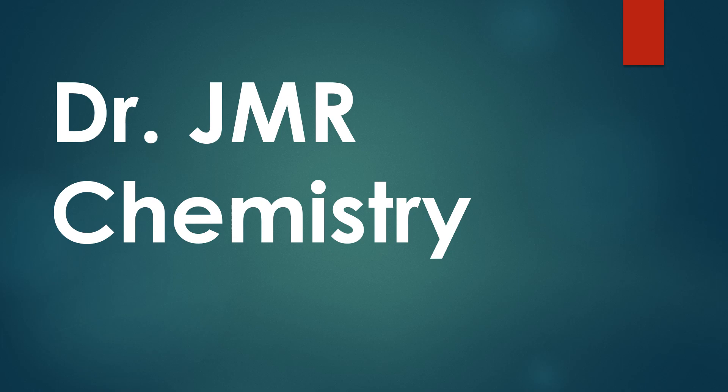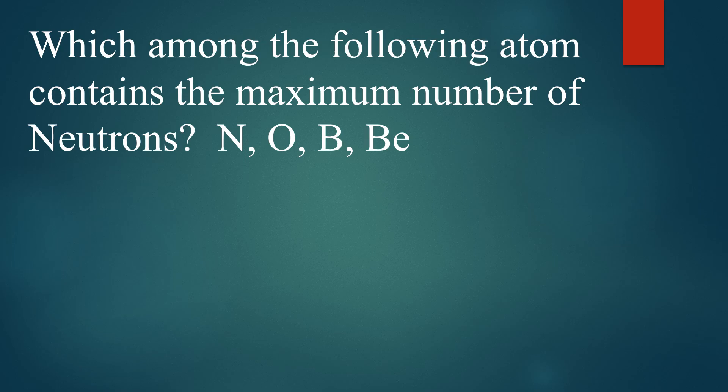First question: which among the following atoms contains the maximum number of neutrons? We are asked about the maximum number of neutrons present — whether you take nitrogen, or oxygen, or boron, or beryllium. First, suppose you take nitrogen: nitrogen's atomic number is 7, and mass number is 14.